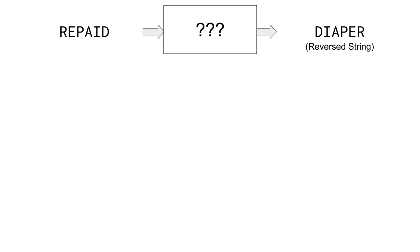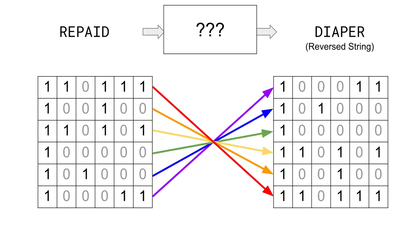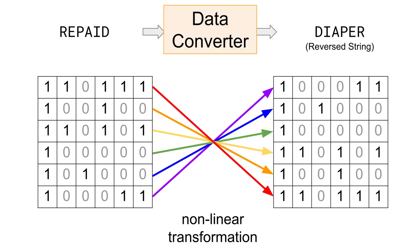We would need to find a matrix that swaps the first row of our data with our last row, the second row with our second-to-last row, and so on. Try as we might, we cannot find such a matrix because this operation is non-linear — it is impossible to achieve this with matrix multiplication alone. The data converter box, with the addition of the softmax function, allows our network to learn how to manipulate data in non-linear ways.